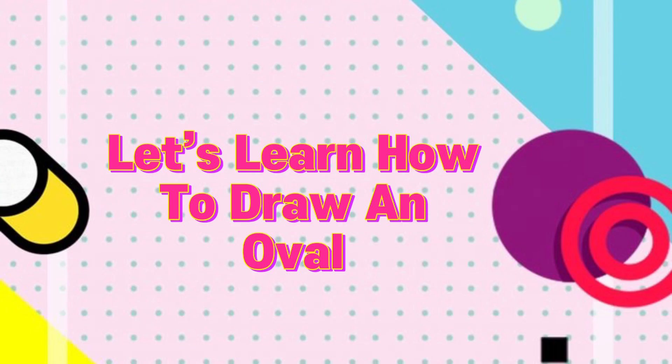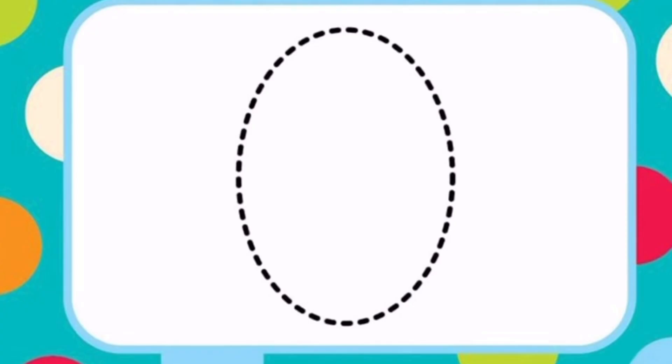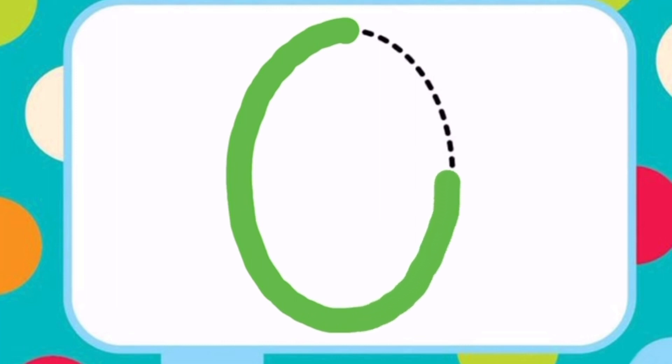Let's learn how to draw an oval. Just draw a full circle in an oval shape like you see on the screen. This is how you draw an oval shape.